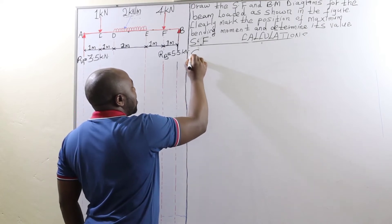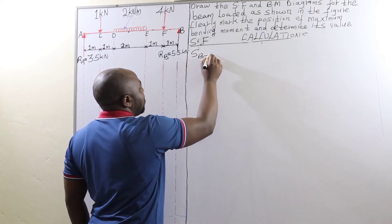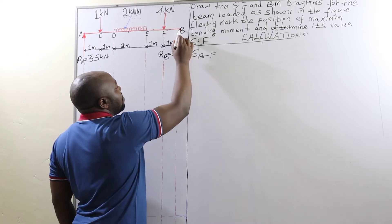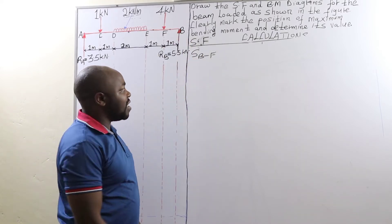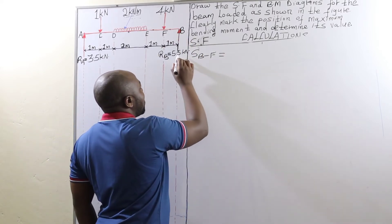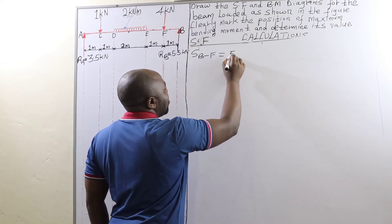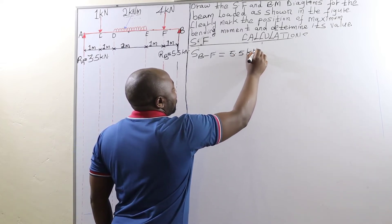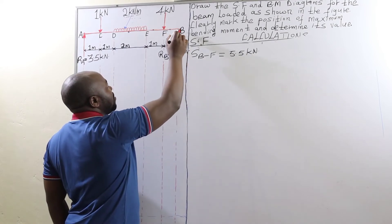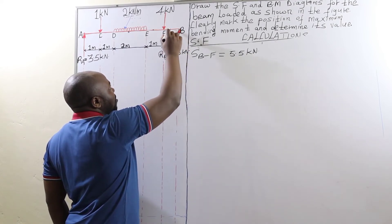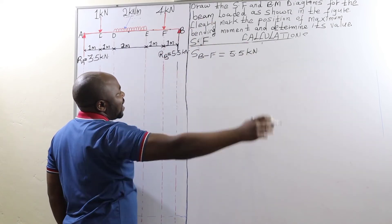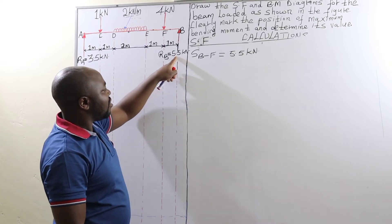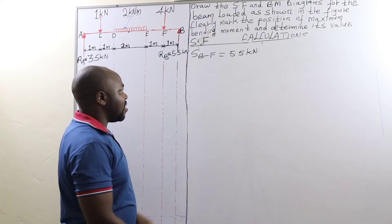We are going to begin with shear force between point B and point F, which in this case is going to be 5.5 kilonewtons. The reason being, when you consider any point between point B and F and check on the right-hand side of that point, you will find that we only have one load of 5.5 kilonewtons.